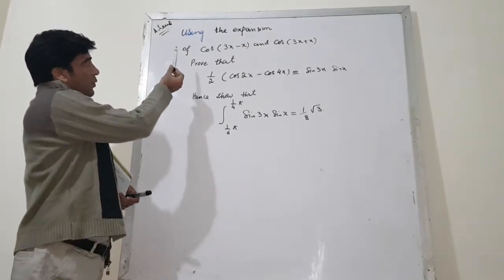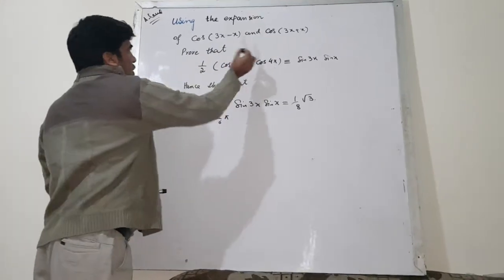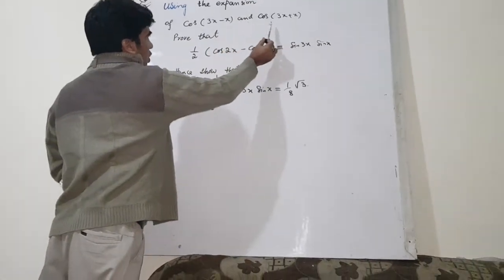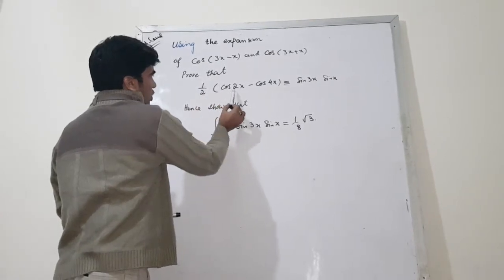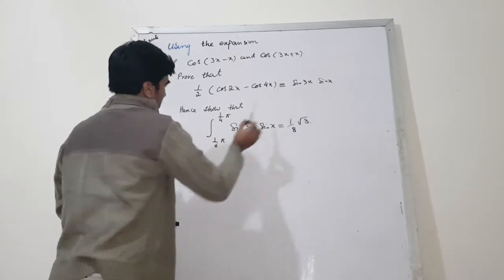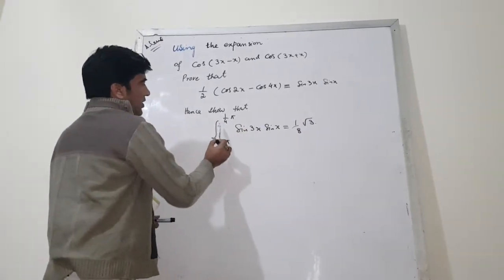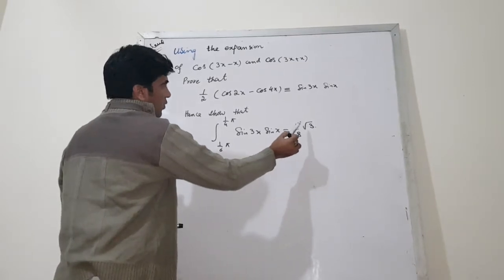If you see the statement of the question, using the expansion of cos 3x minus x and cos 3x plus x, prove that 1 over 2, cos 2x minus cos 4x is equal to sin 3x sin x. Hence, show that the integral of sin 3x sin x is equal to 1 over 8 square root of 3.